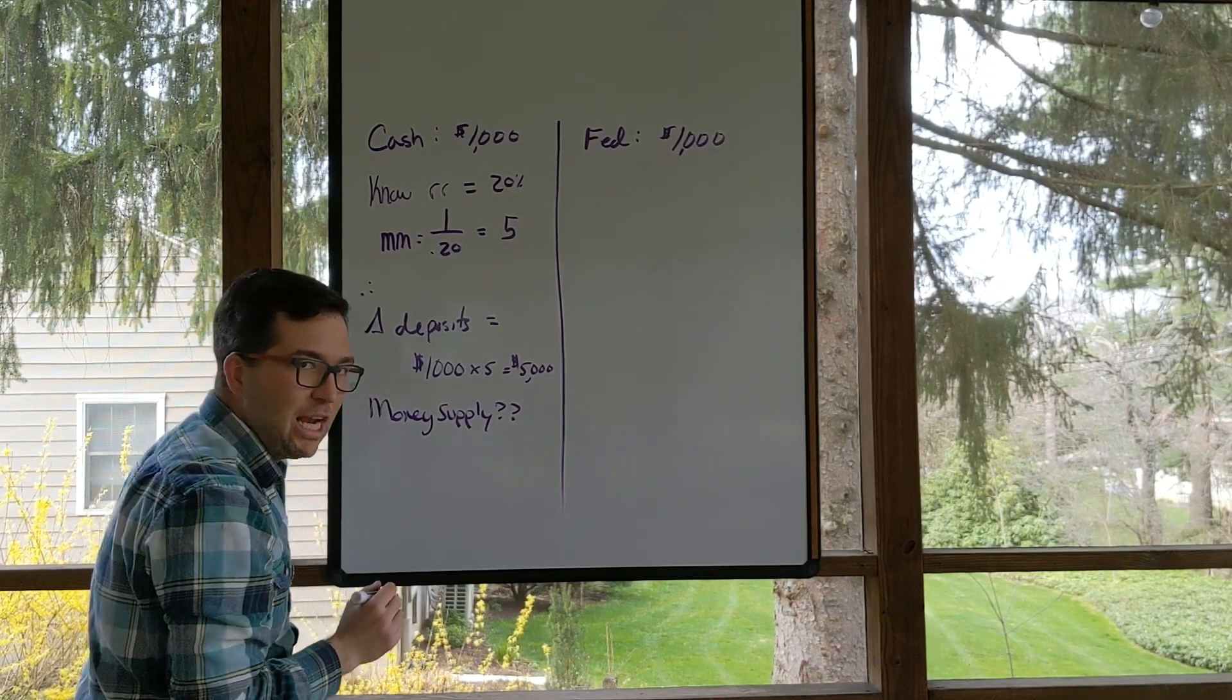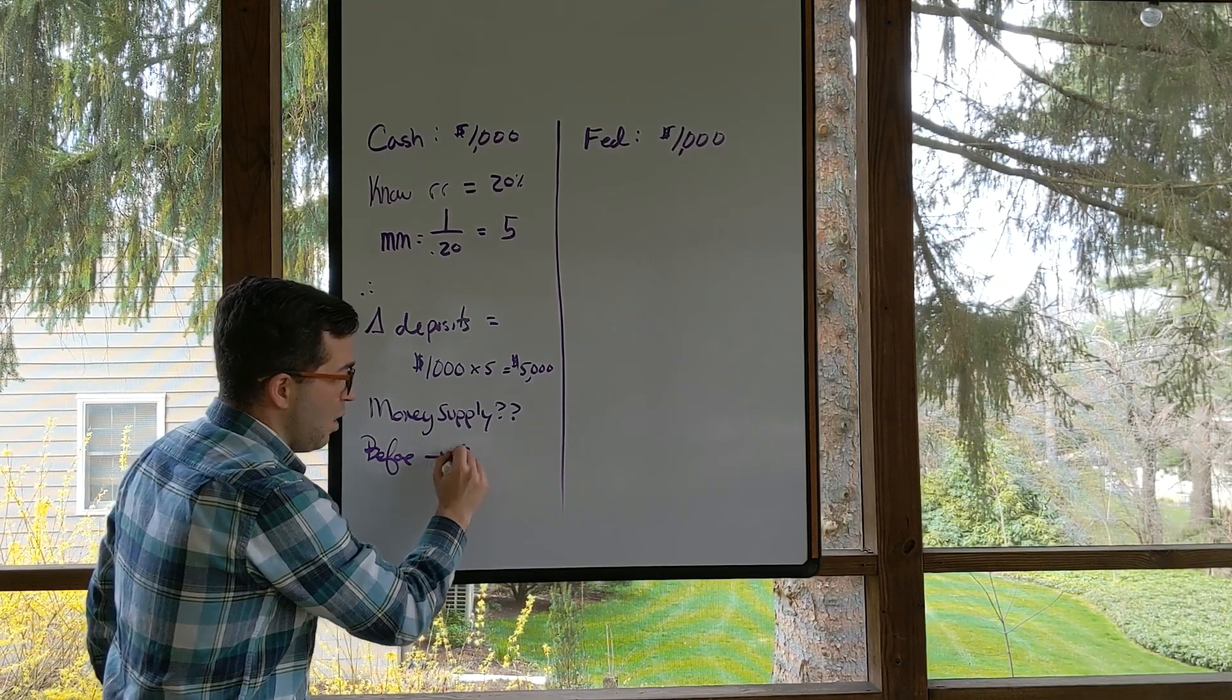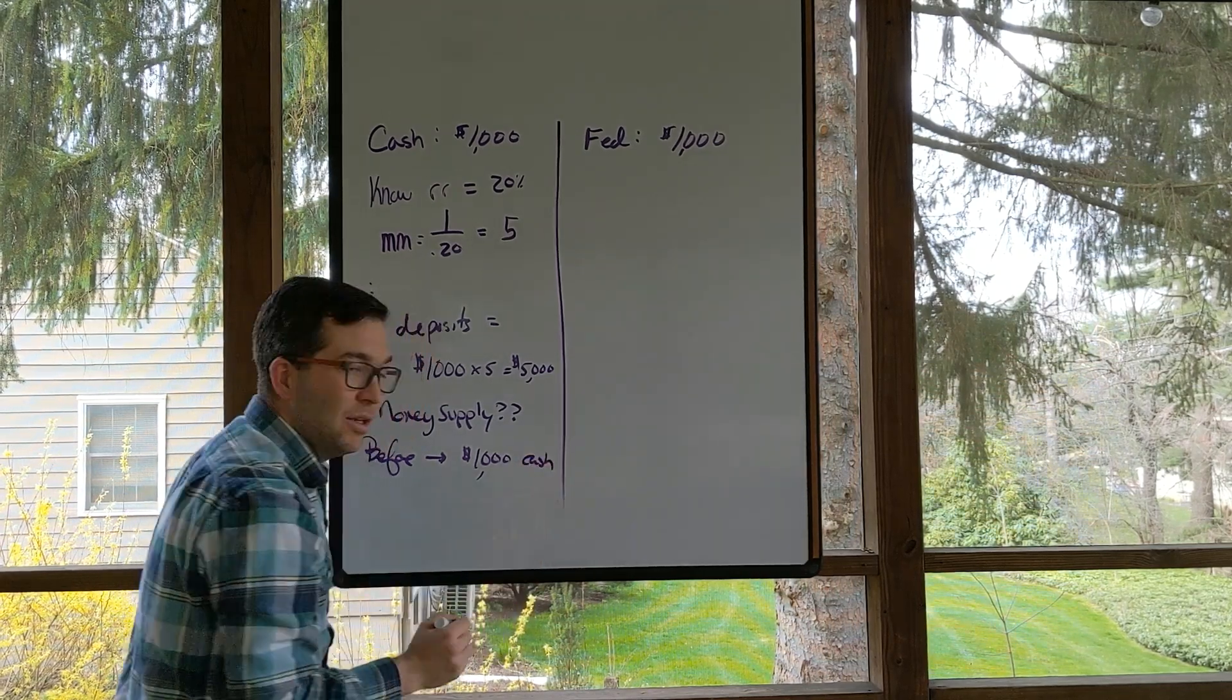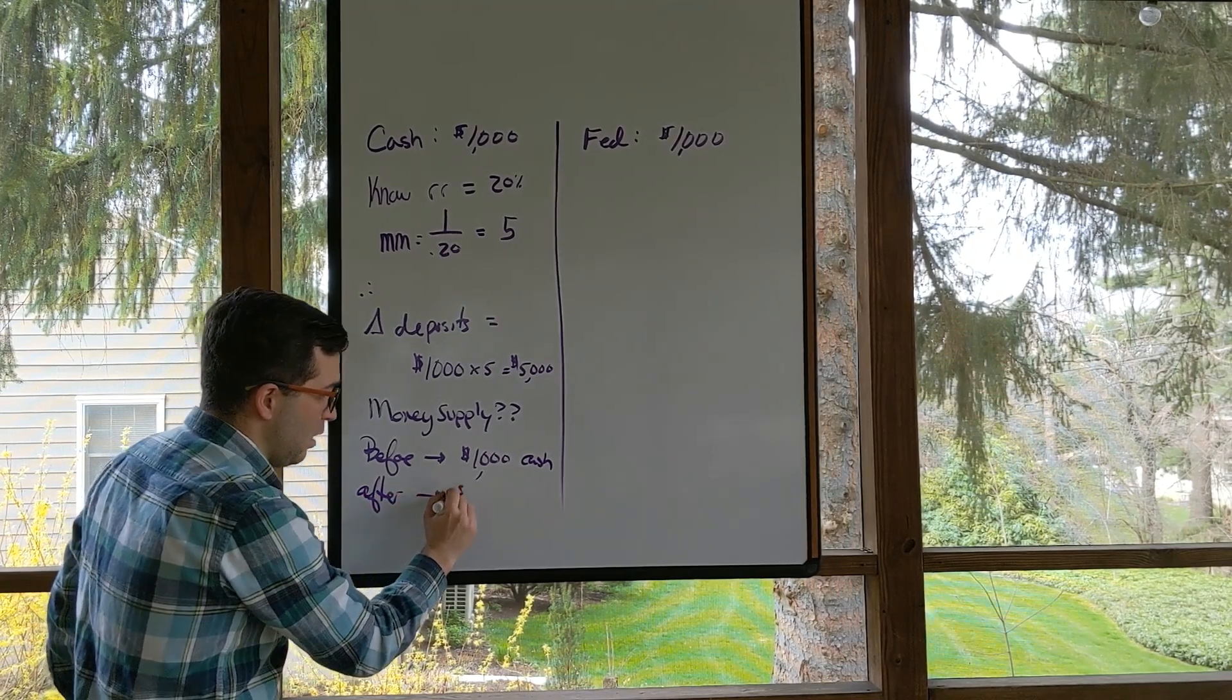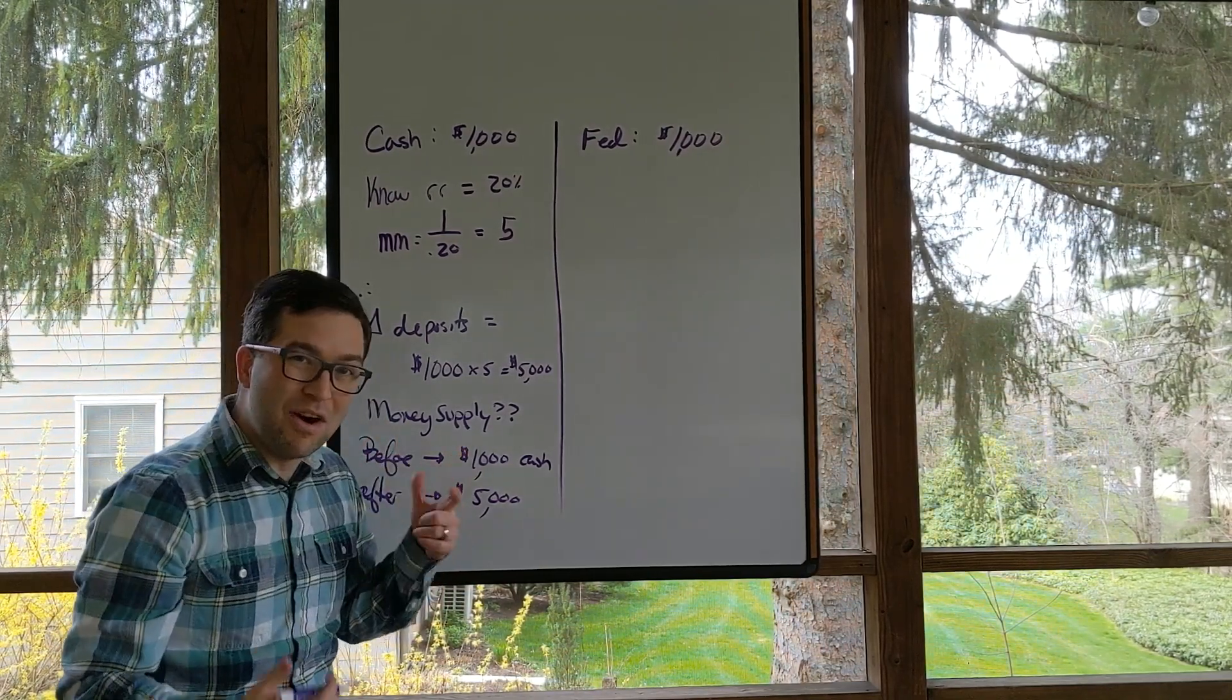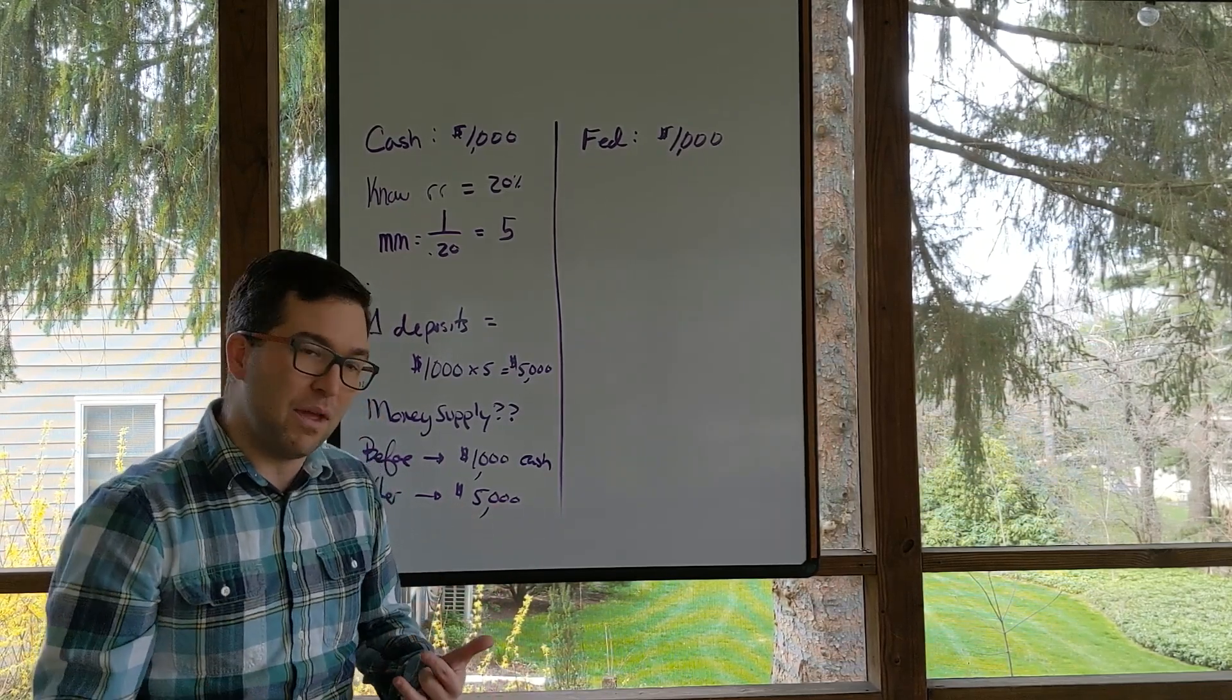How much was there a change in money supply? Well, before the deposit we had $1,000 already as currency. After we have $5,000 in overall deposits, we remember our money supply, our M1 is cash plus deposits, our currency plus our deposits. It's the amount of spendable assets that are out there.